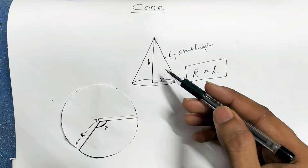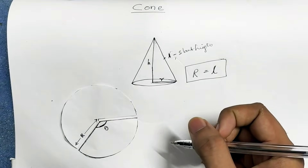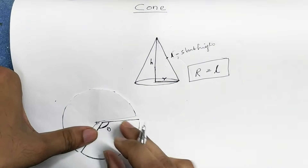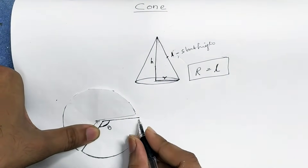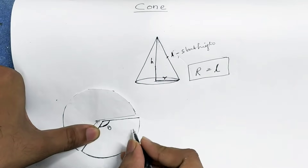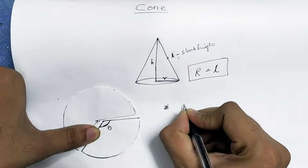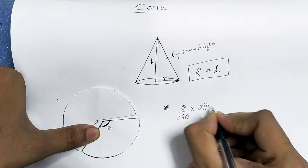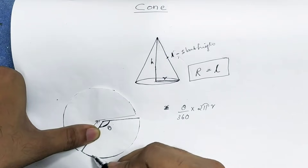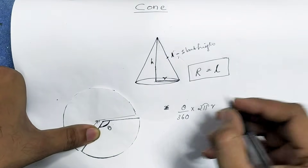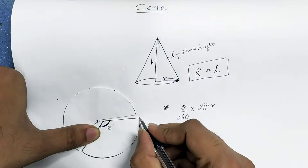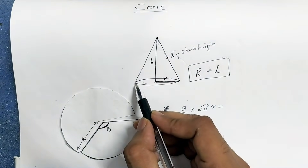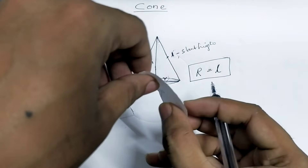The sector has a corner and an equation. What is the equation? The arc is the length. The arc length equals theta by 360 into 2πr. So theta by 360 into 2πr — that is the arc length. Okay?